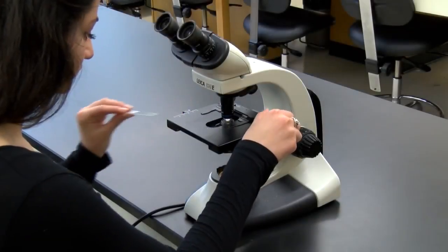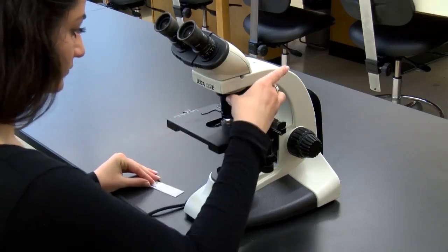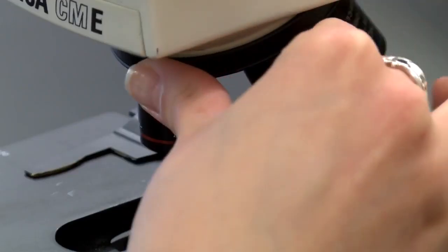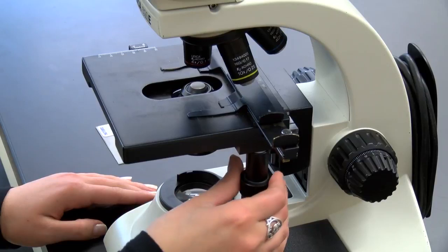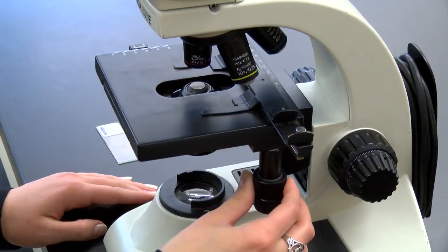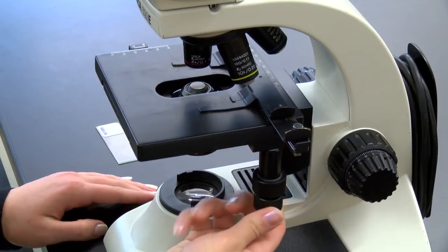When you have finished using the microscope, remove the slide and rotate the lowest power lens in place. Move the stage to a centered position and the slide holder to the left. Check that the stage is clean and dry.